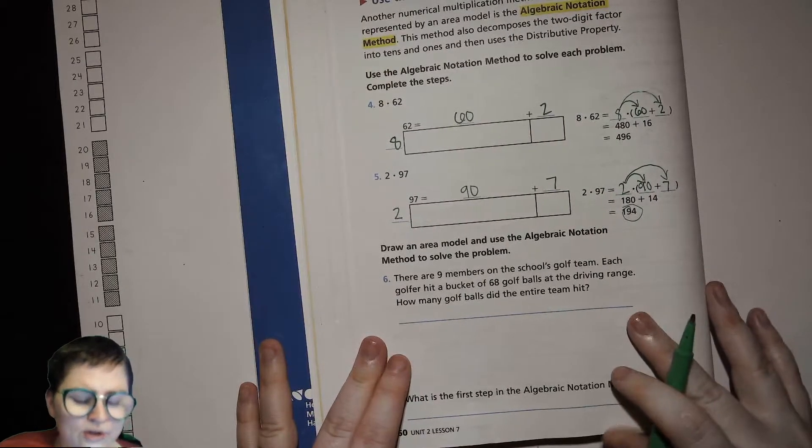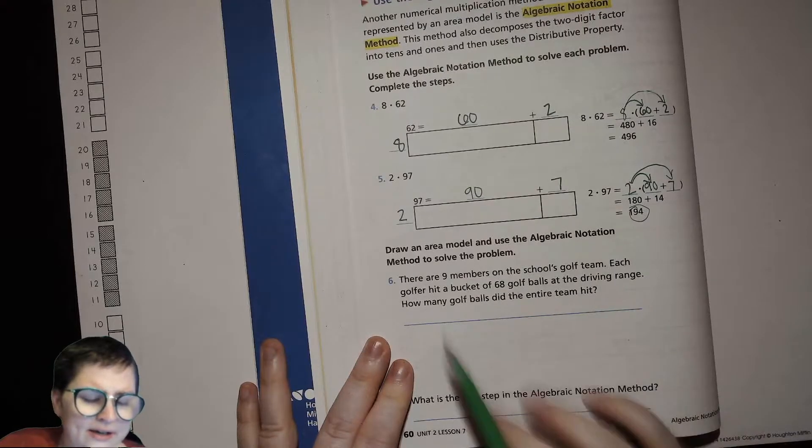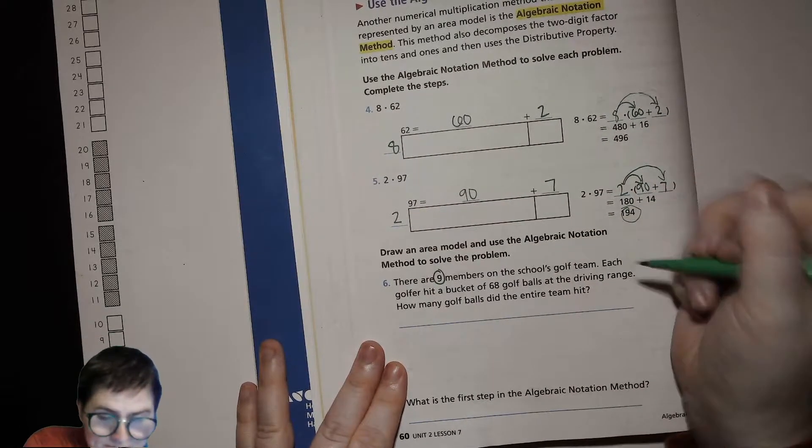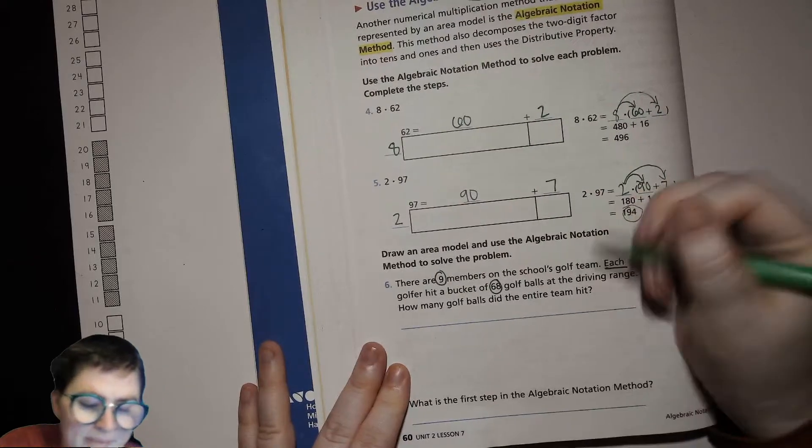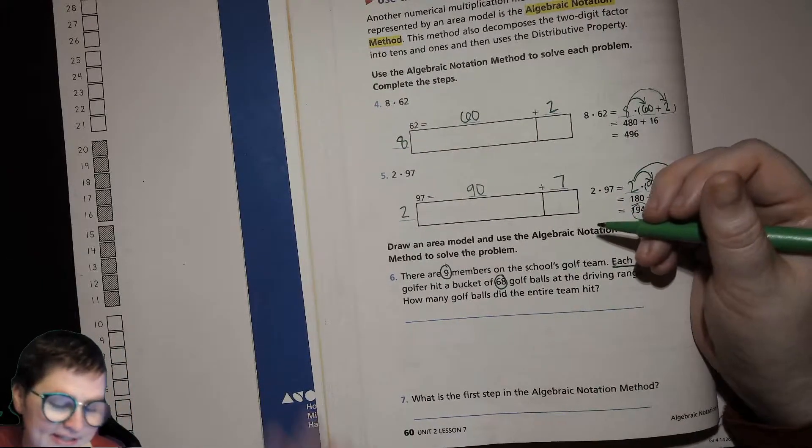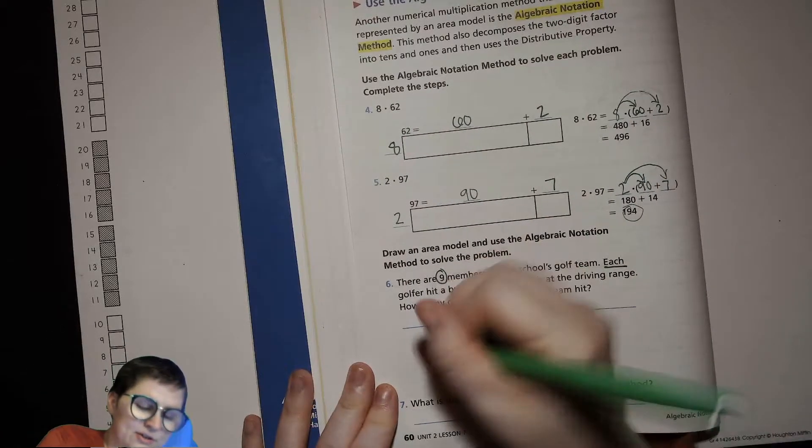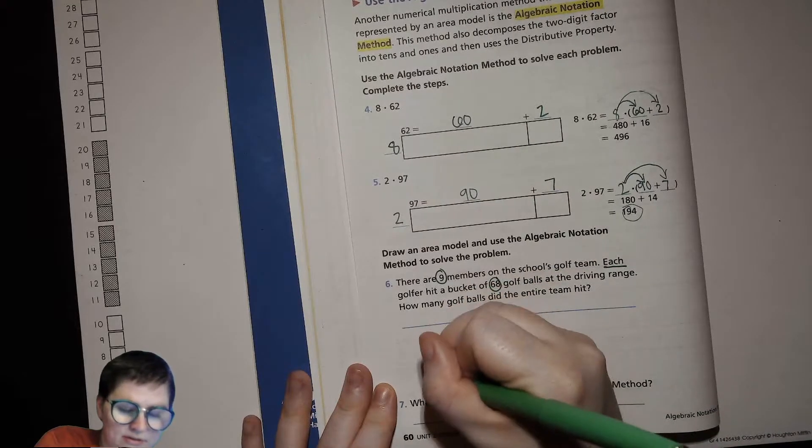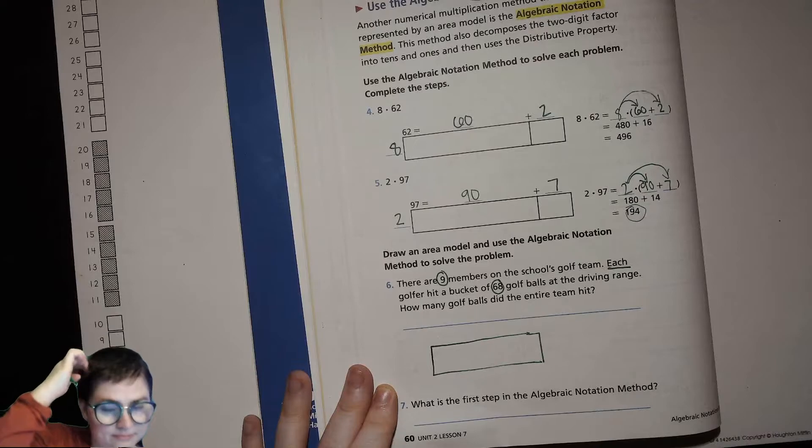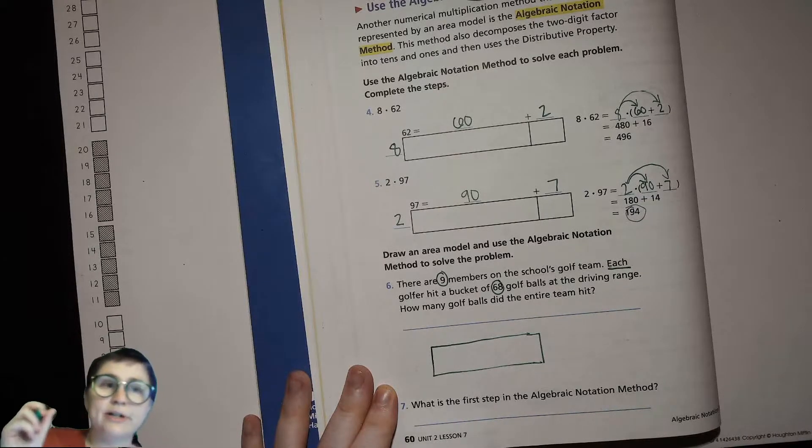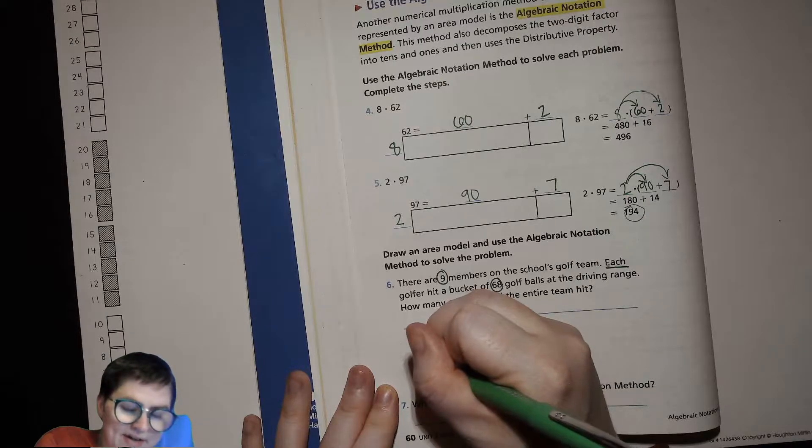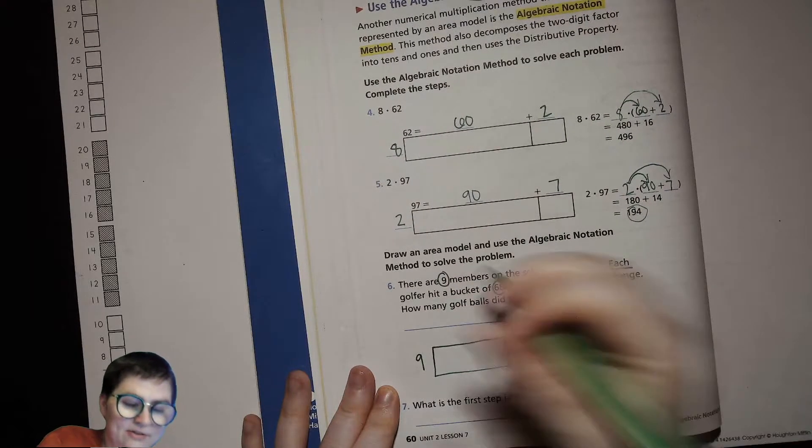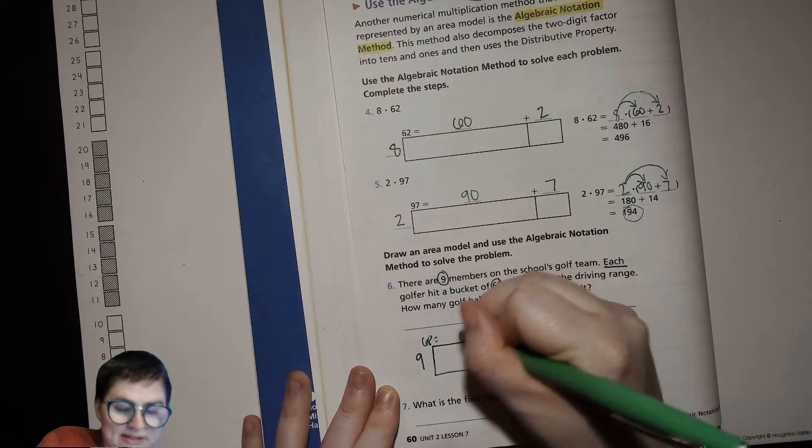Now we are going to draw an area model and use the algebraic notation method to solve the problem. There are nine members of the school's golf team. Each golfer hit a bucket of 68 golf balls at the driving range. How many golf balls did the entire team hit? We'll draw our little model.